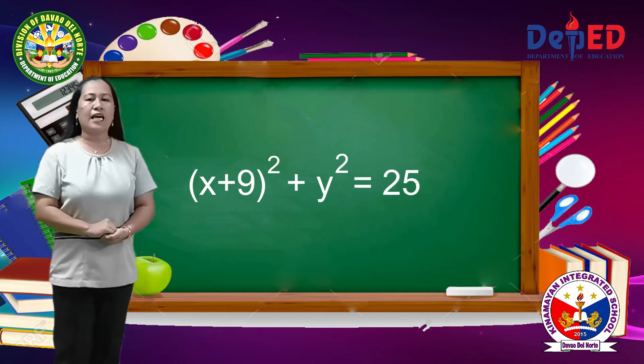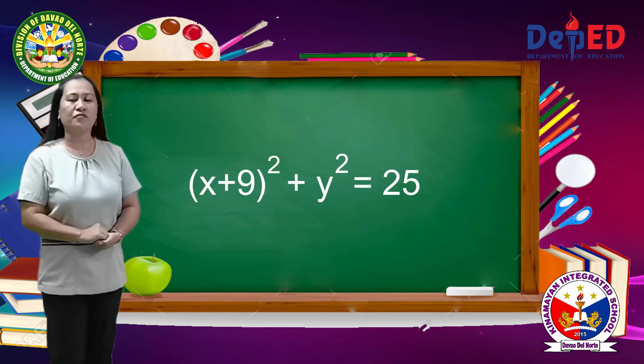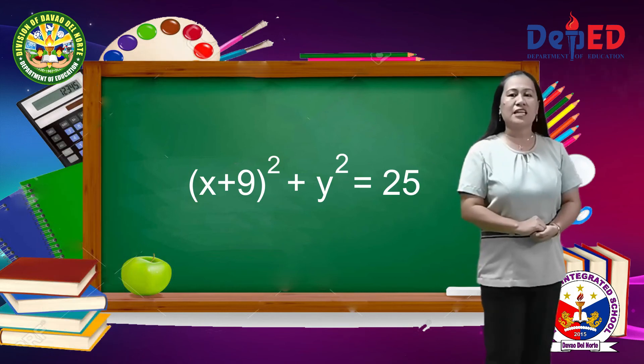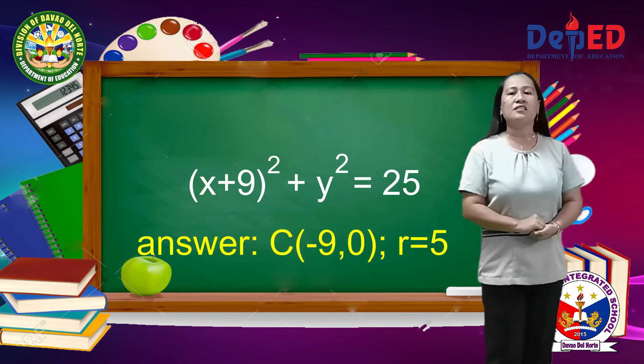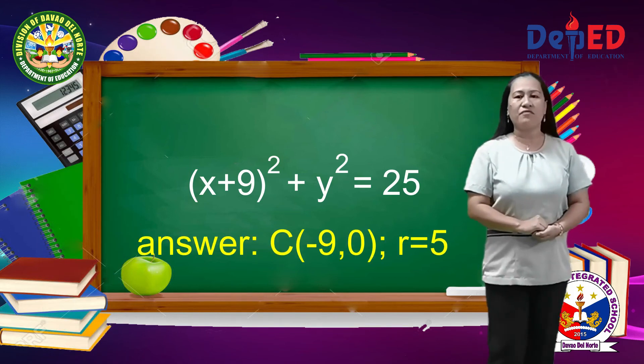Number 2: quantity x plus 9 squared plus y squared equals 25. Correct! The center is (negative 9, 0) and r is 5.